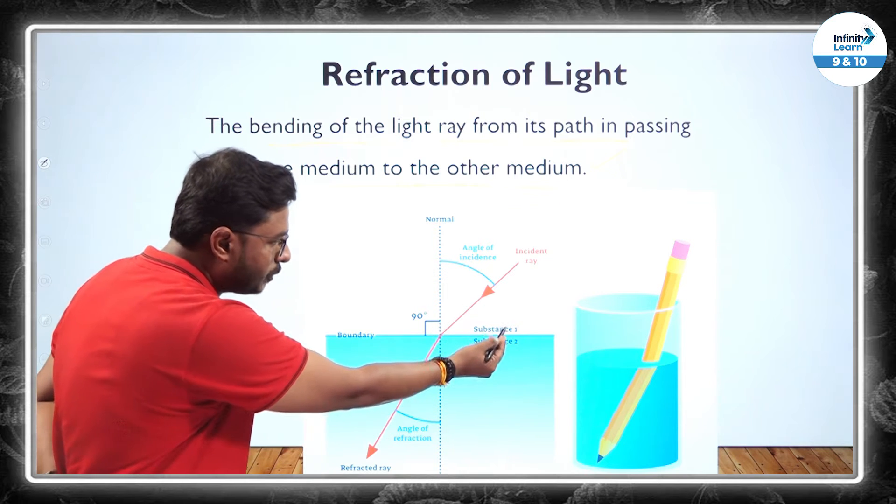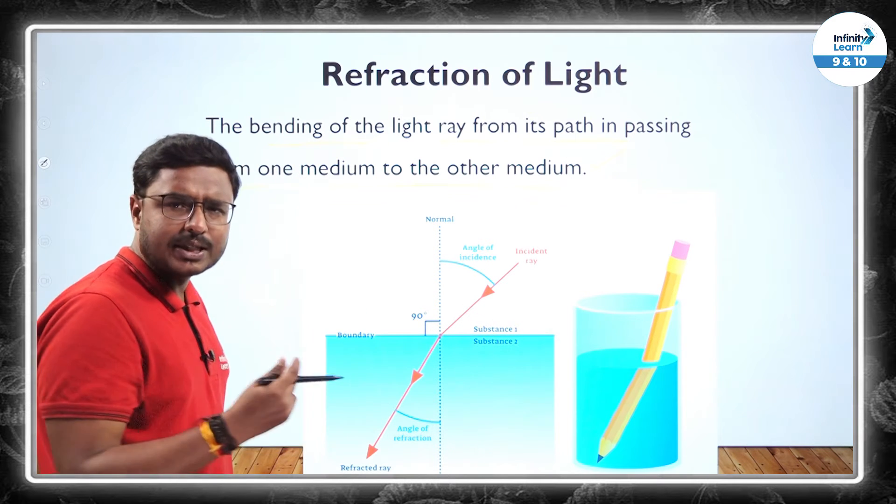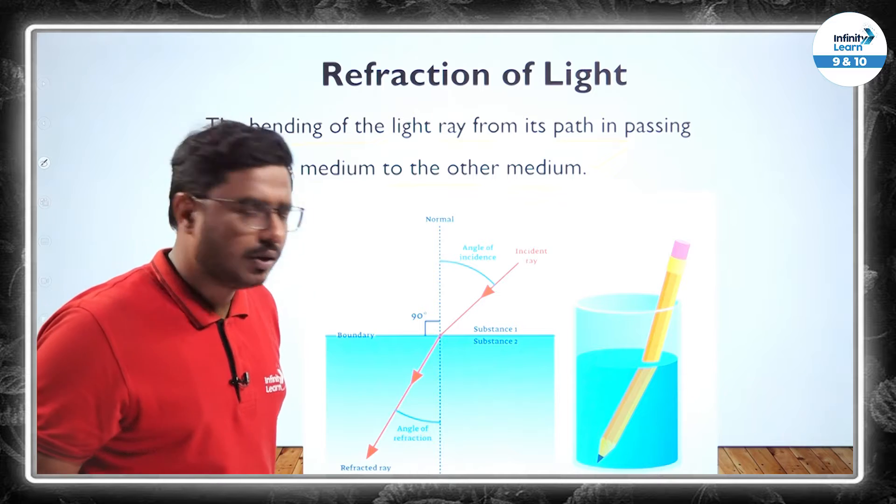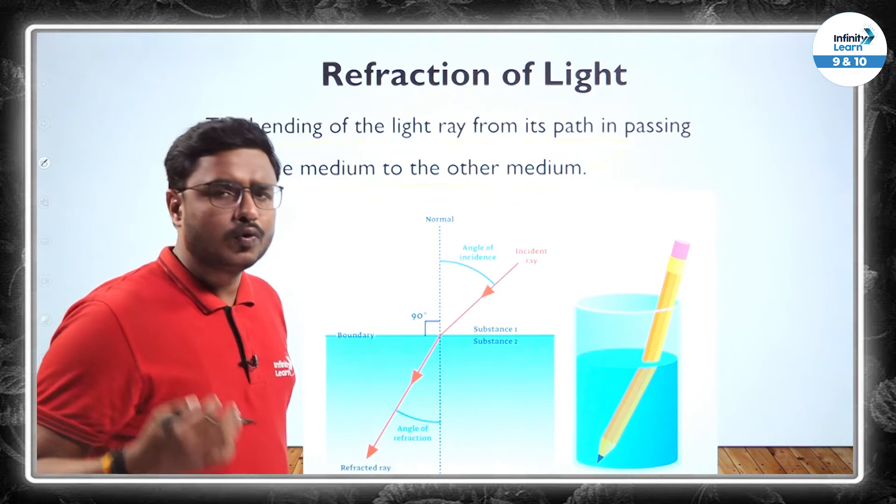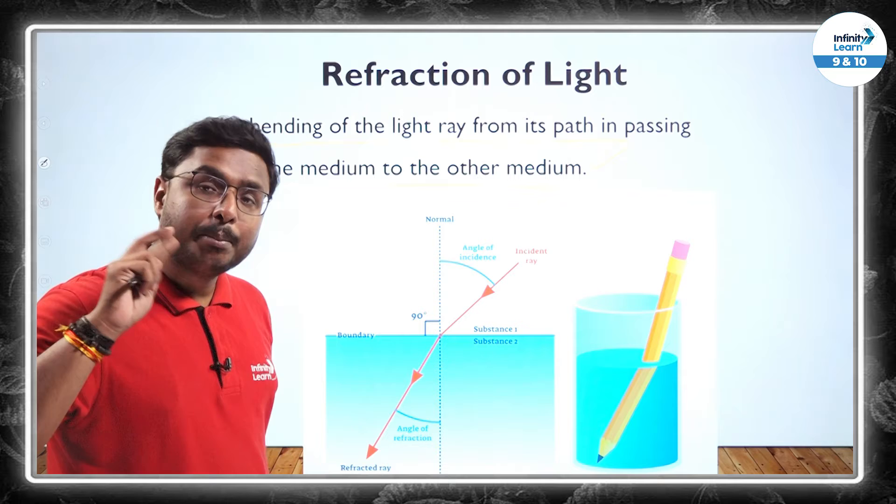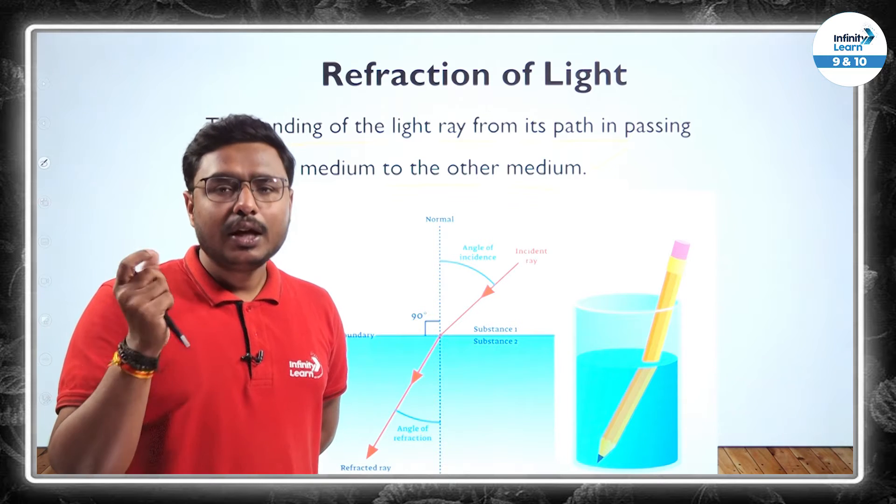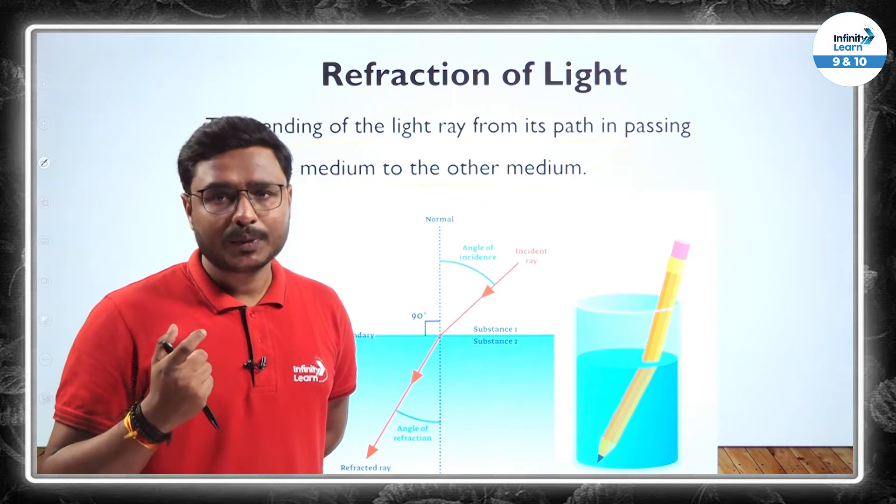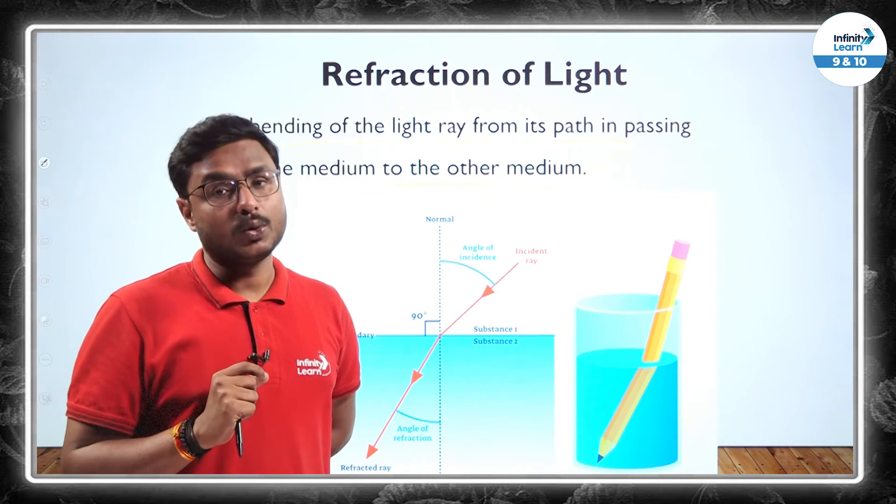Light is coming from substance one to substance two. That substance one and substance two can be anything: air to water, glass to water, water to glass, oil to water, any medium. But there will be that difference in the refractive index will be there. Then only the refraction is going to be happened.